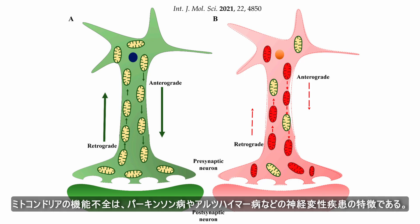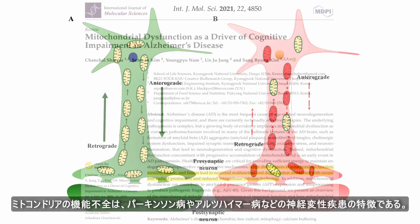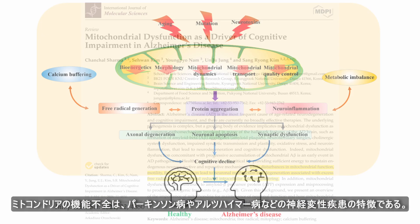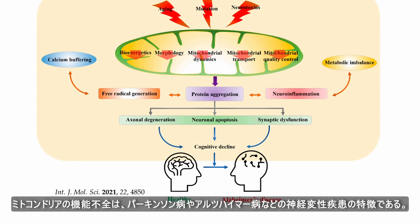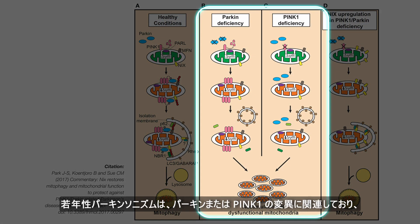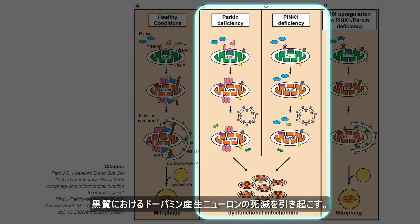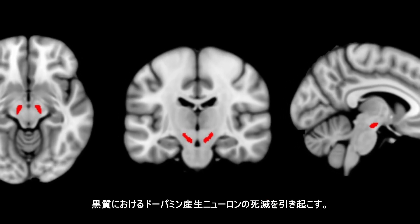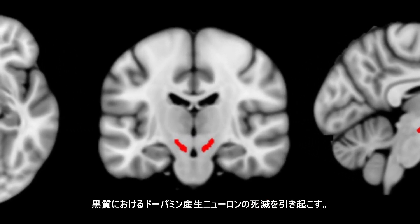Mitochondrial dysfunction is a hallmark of neurodegenerative conditions such as Parkinson's disease and Alzheimer's disease. Juvenile Parkinsonism is associated with mutations in Parkin or PINK1, leading to the death of dopamine-producing neurons in the substantia nigra.